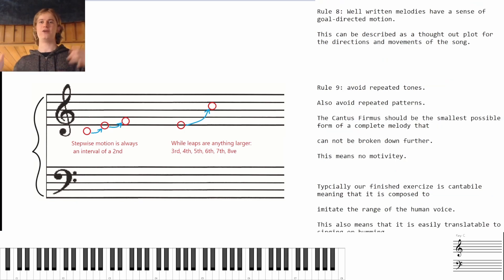Rule eight: well-written melodies have a sense of goal-directed motion. This can be described as a thought-out plot for the directions and movements of the song.